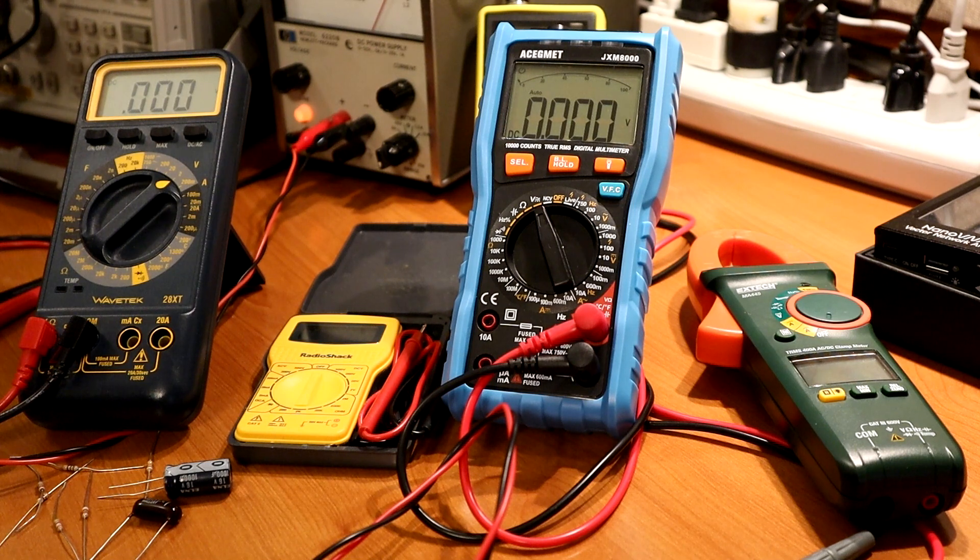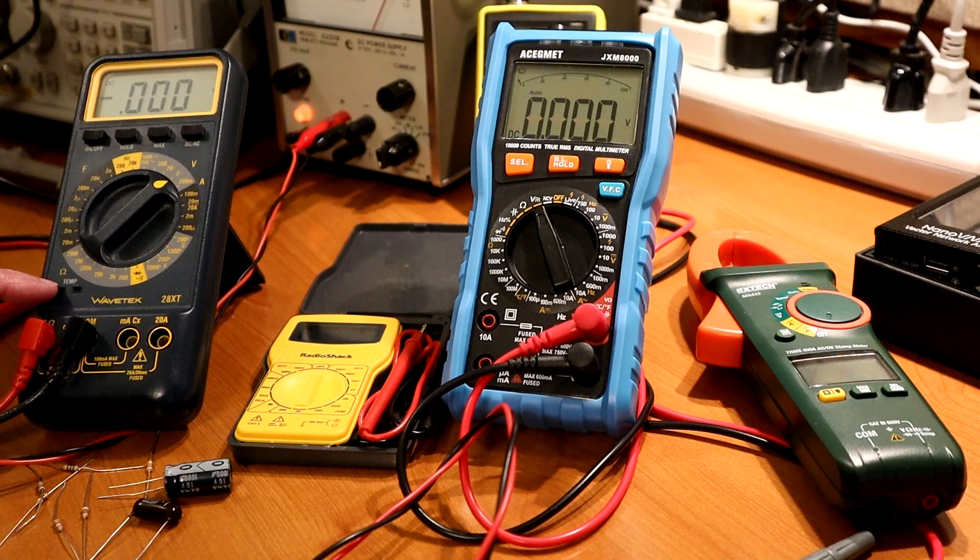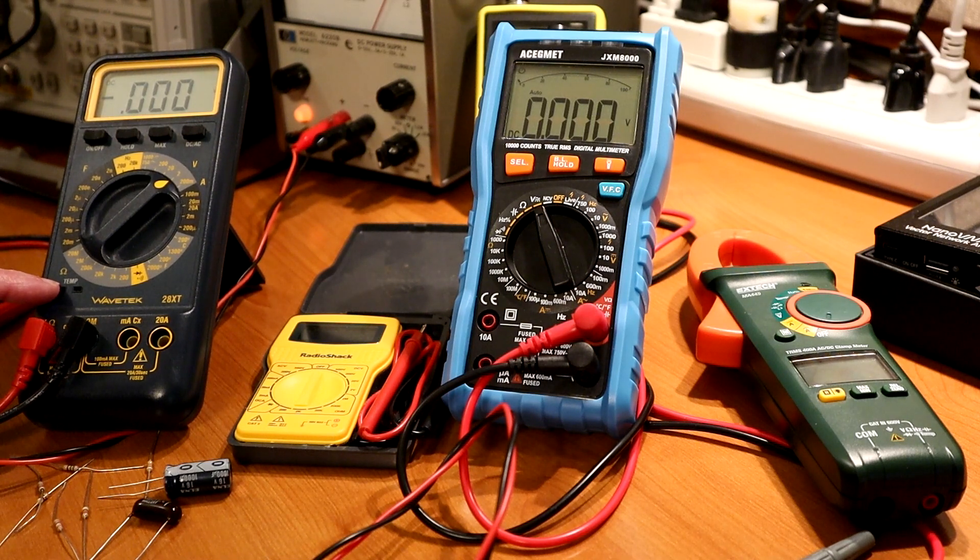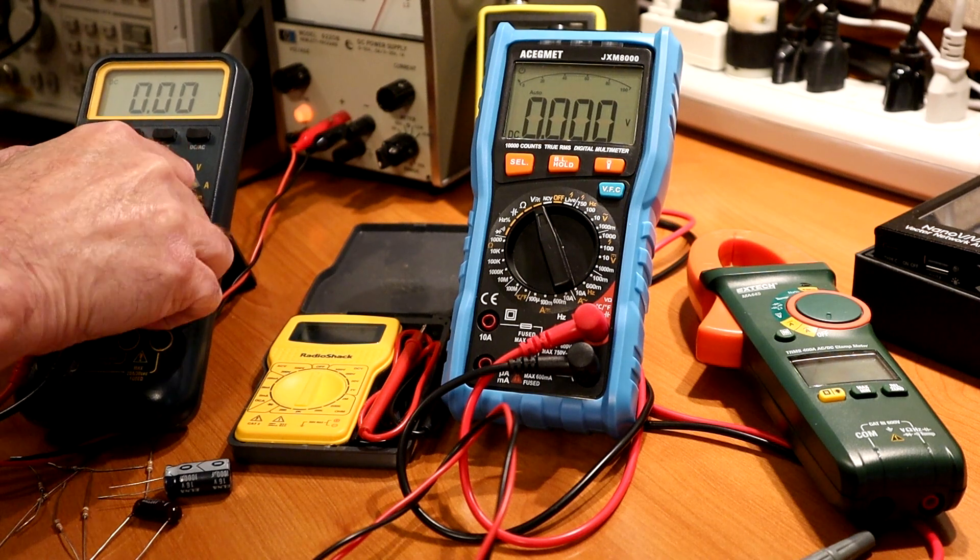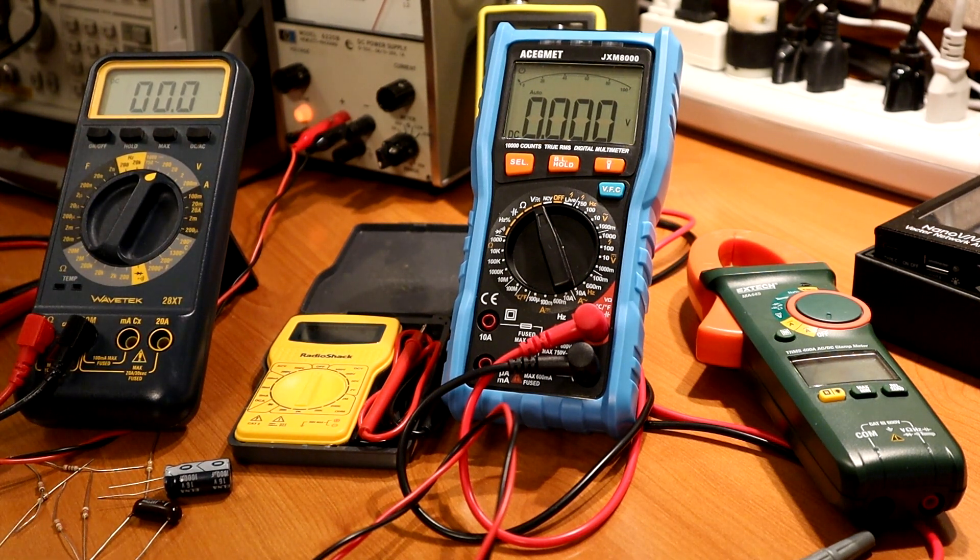So in the world of multimeters, they all work somewhat the same. This is a Wavetech one I bought about 20 years ago. And what I like about it is that it has manual scales. So you can set it to different ranges. And that generally means it responds very quickly.